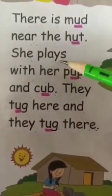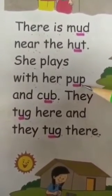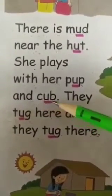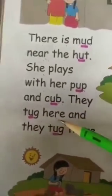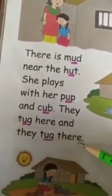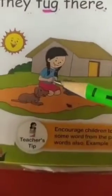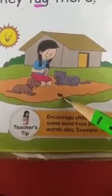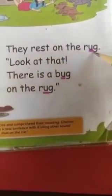M-U-D, mud near the hut. She plays with her pup — P-U-P, pup. Next, here is again a picture of Goosey, pup, and cub, and here is a bug.